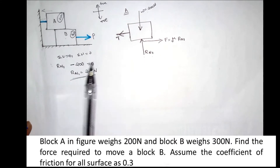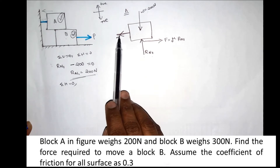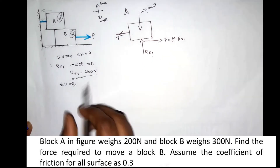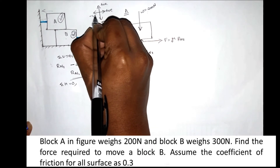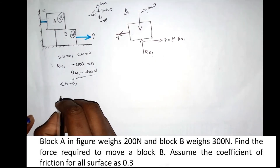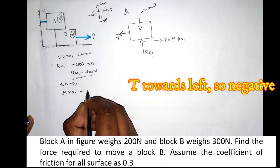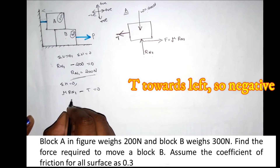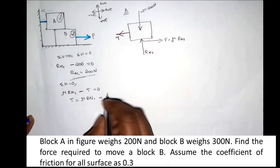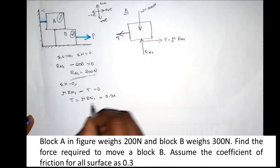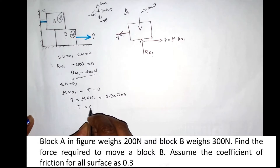Now we apply Sigma H equals 0. The sign convention is right as positive and left as negative. The horizontal equilibrium gives: mu into Rn1 minus T equals 0, therefore T equals mu into Rn1.